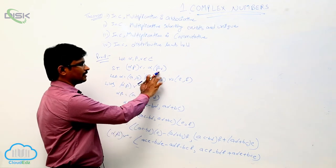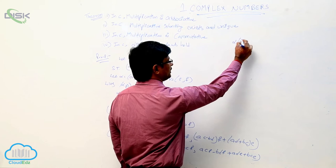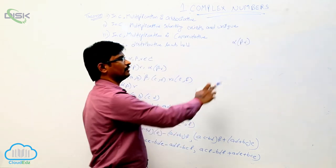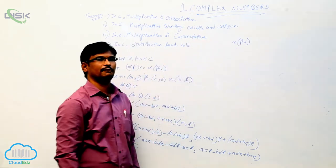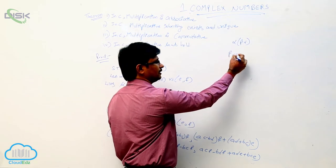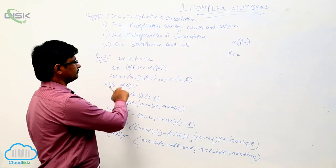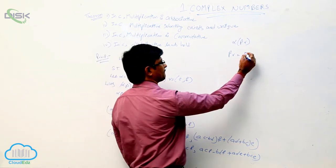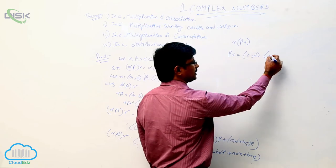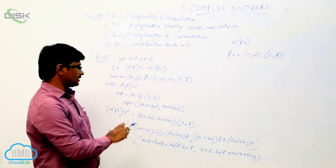Now find out the value of alpha into beta gamma. First we will find out beta gamma, then multiply with alpha. What is the value of beta? Beta is (c, d), and gamma is (e, f).